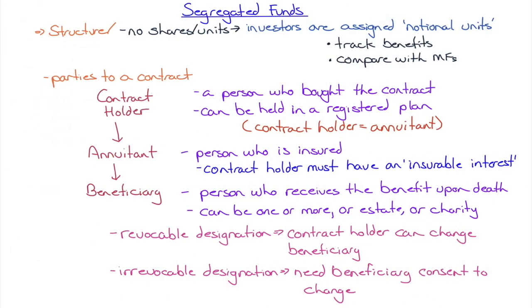Let's look at the structure of a segregated fund. With a mutual fund, we give money and get units in return — units representing our ownership claim on the pooled fund. Not so with a segregated fund: when we give money to the insurance company, it is no longer our money. We've given it to the insurance company; those are the insurance company's assets, not ours.